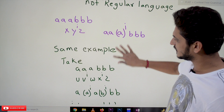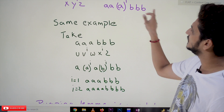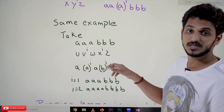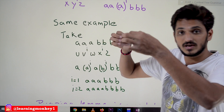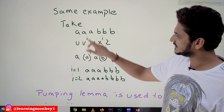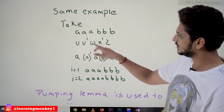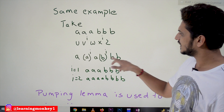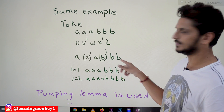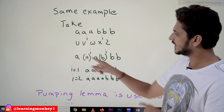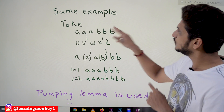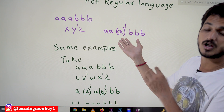Coming to context free languages, for the same example A A A B B B, if you divide the string into five parts U V^i W X^i Y — meaning we are taking two pumping variables — see what happens. U as A A, V as A, W as empty or B, X as A B, Y as B B B. If you keep on pumping with i=1 you get A A A B B B, and with i=2 you get four A's followed by four B's.